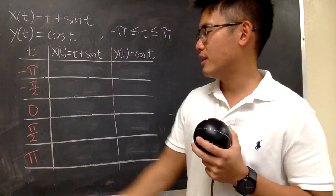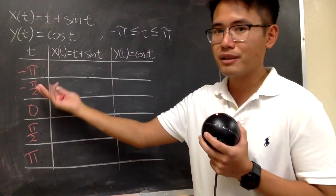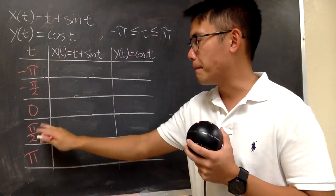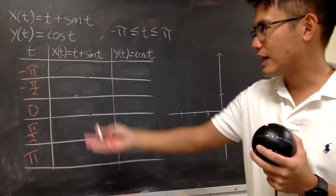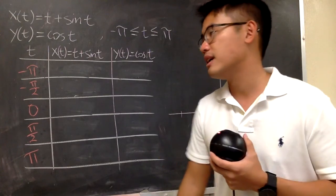And I put negative pi here and positive pi here, and I also want to use 0 because it's in the middle, and let's not be lazy, let's also pick negative pi over 2 and positive pi over 2, and we just have to plug in these values into all the t's and work out x and also the y's. All right, here we go.